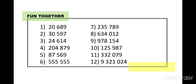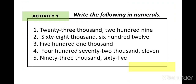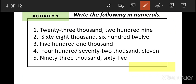Very good. If you are done reading all the numbers, then we proceed with the next slide. Activity 1: Write the following in numerals. Using your printed learning material, I want you to write the following in numerals. Example number 1: 23,209. So all you need to do is to write it in numerals. Since I have already started answering the first item, all you need to do is pause this video and answer number 2 to number 5. Very good. If you are done answering, then we proceed to the next.